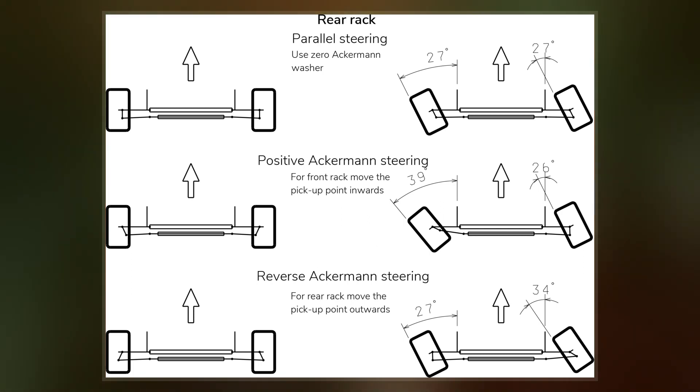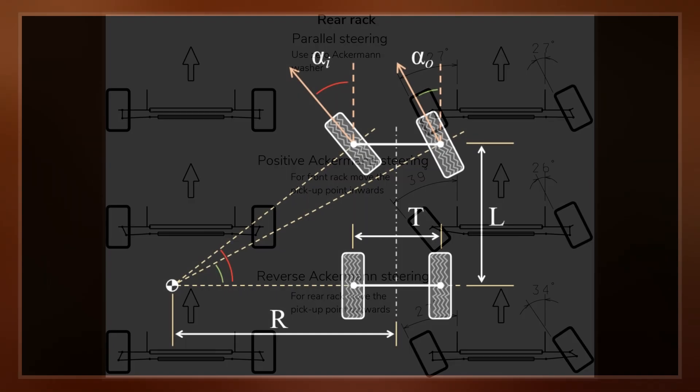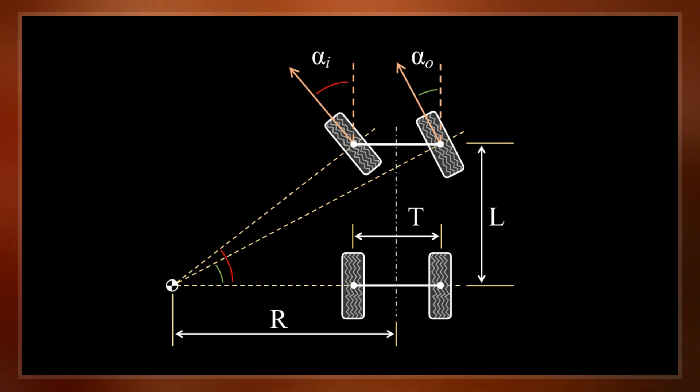The geometrical solution to this is for all wheels to have their axles arranged as radii of circles with a common center point.